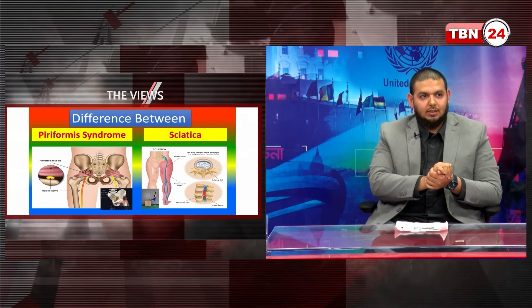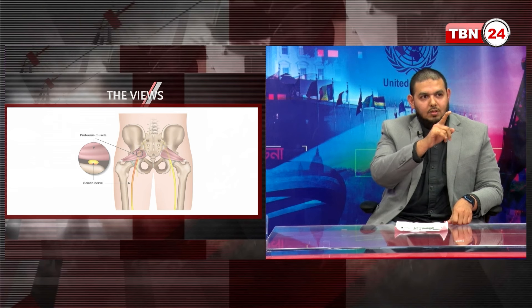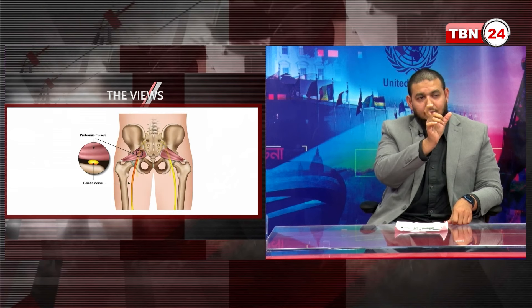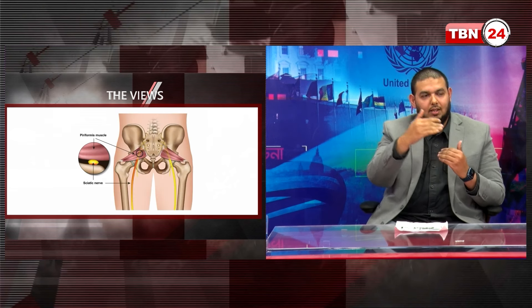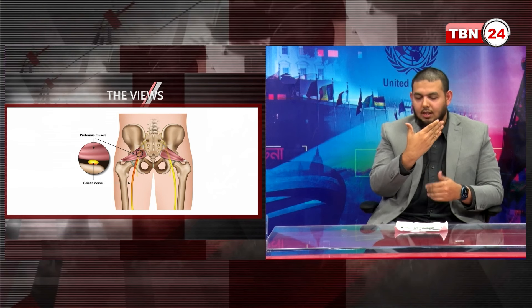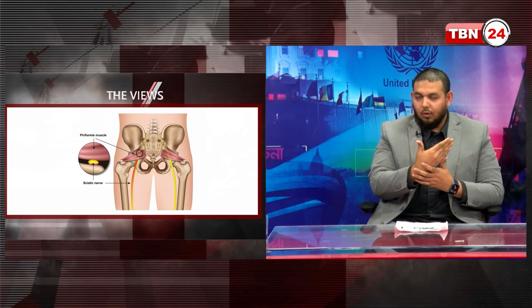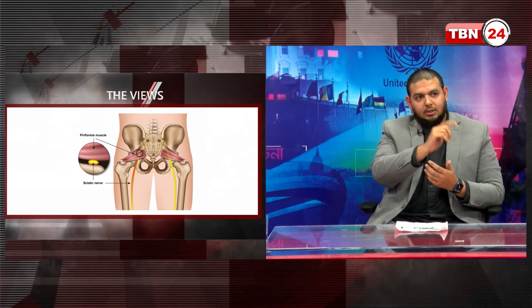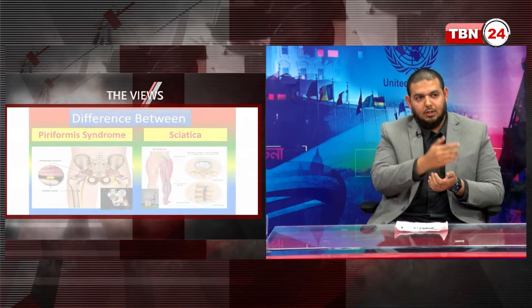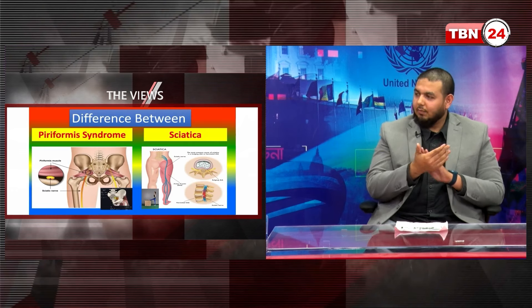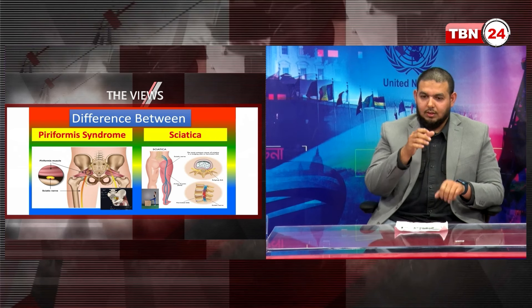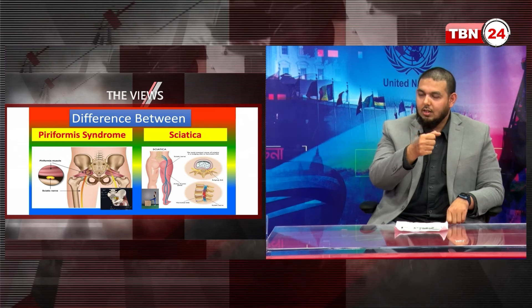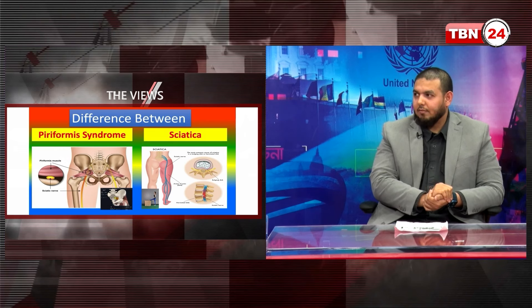When you look at picture number 4 and 5, you can see the piriformis syndrome. This is a large form of muscle. You have your spine and your hip. When the piriformis muscle is inflamed, you can see it affecting the sciatic nerve.